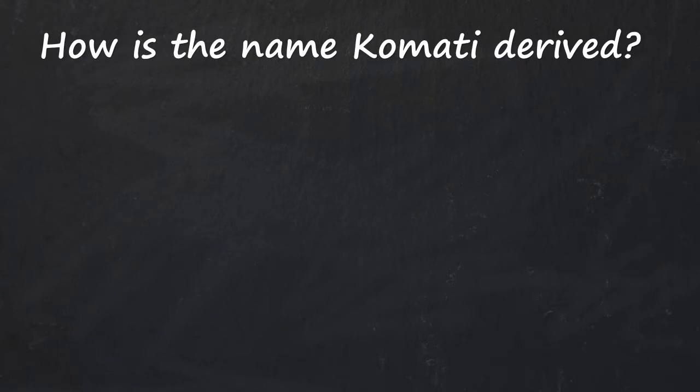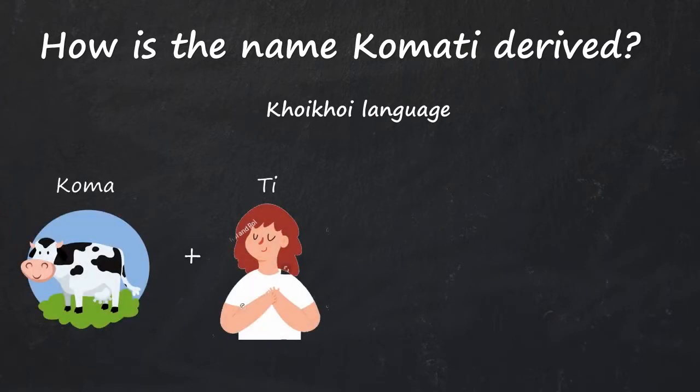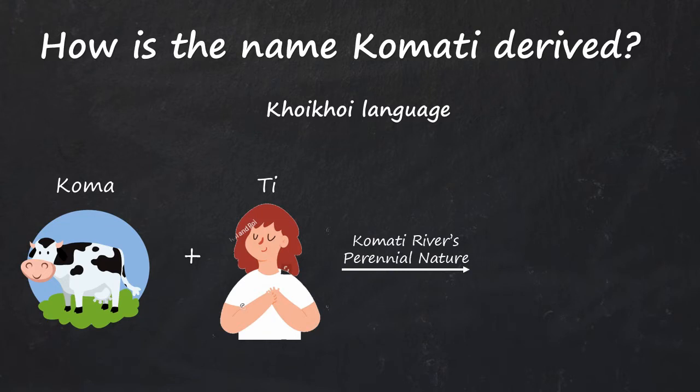And how is Komati derived? Well, in one of South Africa's first languages called Khoi Khoi, Koma means cow and T means Mai. Thus Komati river's perennial nature is compared to the cow that always gives milk.